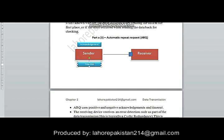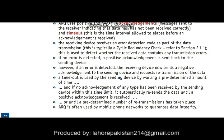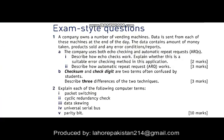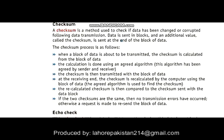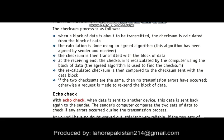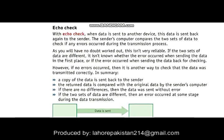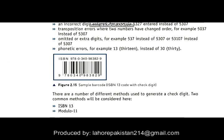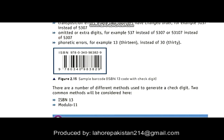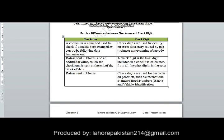Now let's move on to the next question. In part B, you have to tell three differences between checksum and check digit. In checksum, a whole block of data is considered — every byte is converted into binary form and some formula or algorithm is applied. In check digit, there are barcodes on products or ISBN numbers which have a last digit attached to them known as a check digit, which is not based on a whole block of data.